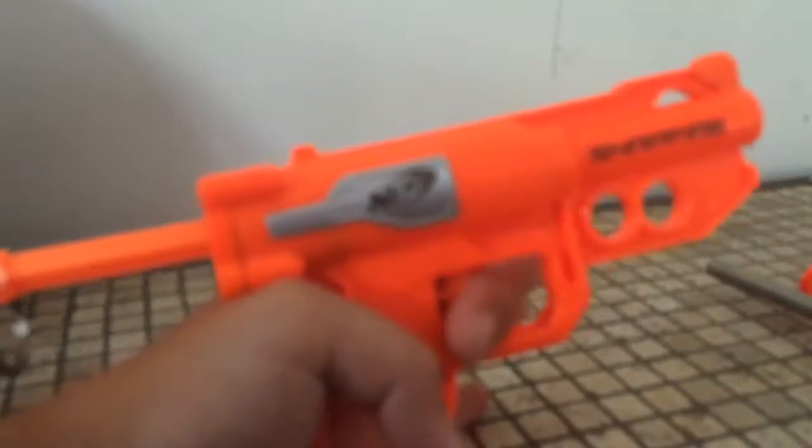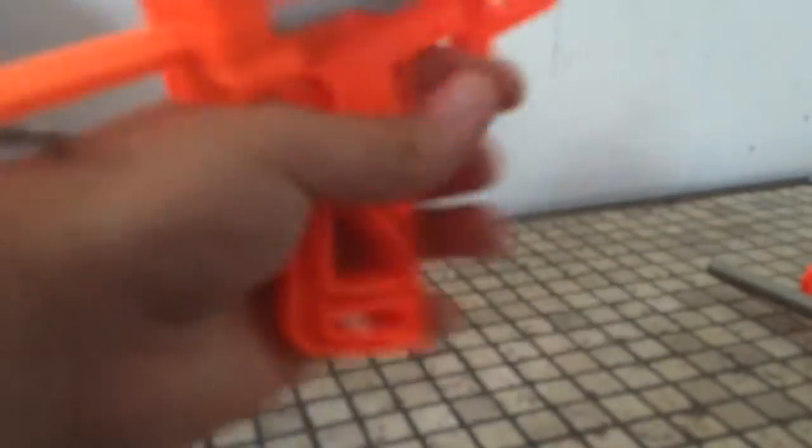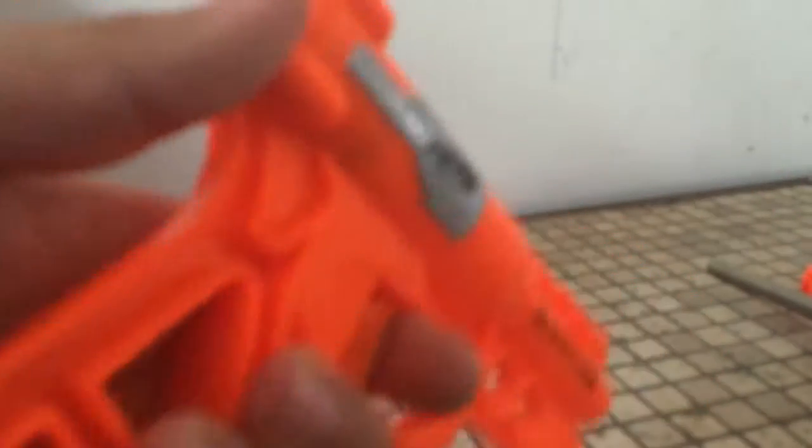So yeah, this was a five dollar modification and it increases the FPS of the Snapfire along with giving it a bigger draw. Because the plunger tube isn't restricting any space. You know, I'm just going to tighten this up a little bit more. It's kind of loose. And there we go.